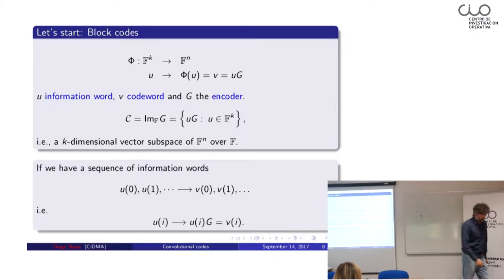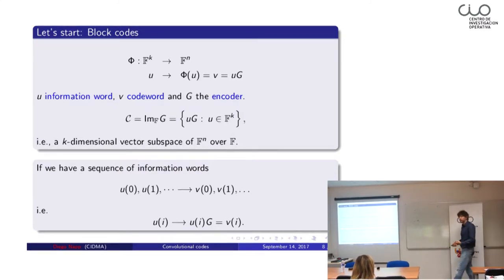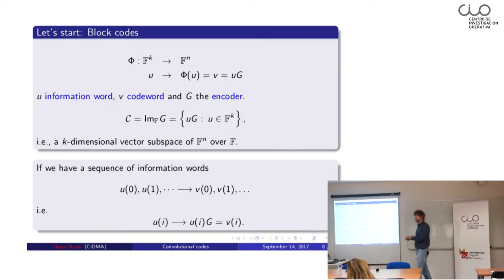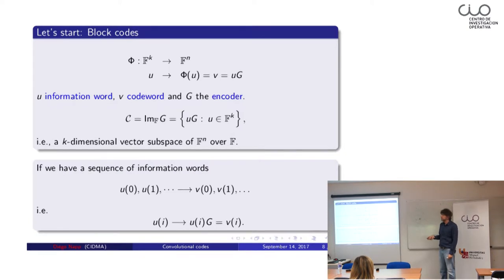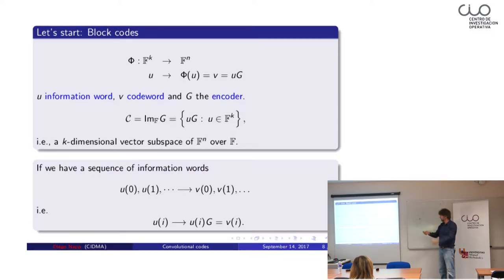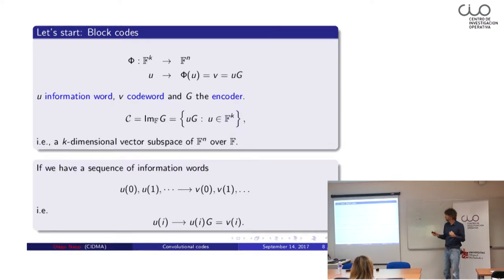Normally you cannot send a whole file at once. You cut it into pieces — packets — and send the packets. Imagine sending a picture: you cut it into pieces, encode each one through the matrix G, and send them sequentially. Each piece is encoded independently of the others and you get a sequence of encoded packets. This is called a block code, because each piece of information is encoded independently.